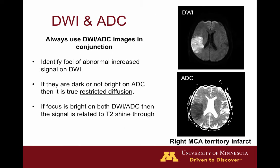Here we have an example of DWI and ADC images viewed in conjunction to come up with the correct diagnosis. On the top image there is high signal within the right cerebral hemisphere in a portion of the right middle cerebral artery territory. Looking at the same region on the ADC map, we see low signal, representing true restricted diffusion — this is a subacute right MCA territory infarct. Over the next few days the ADC signal becomes brighter, and when DWI is still bright but ADC is also bright, that's called T2 shine-through. By correlating DWI with the ADC map and other sequences, we can pinpoint with good accuracy within a few days when an infarct happened.